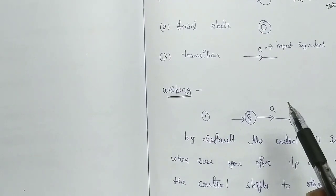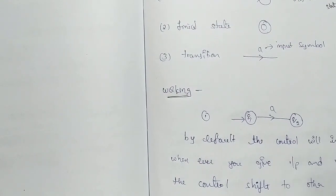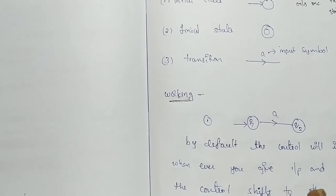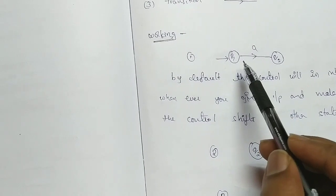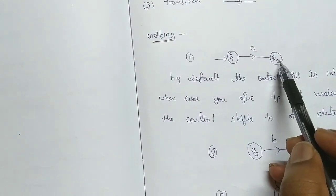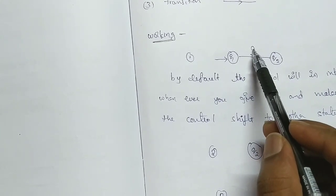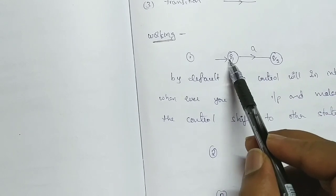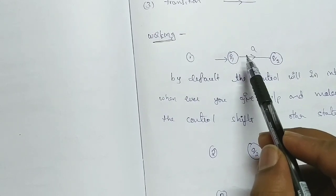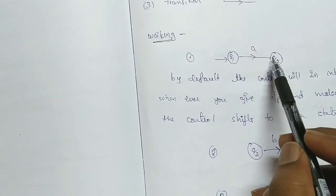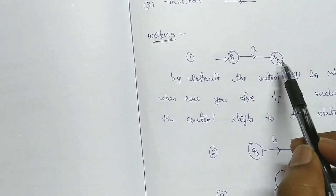In the working of the finite automata, there are three kinds of transitions. One kind of transition is going from the initial state to another state. For example, we start at the initial state, take input symbol 'a', make a transition, and transfer control to Q2. Next time we are at Q2 and we take the next input symbol.